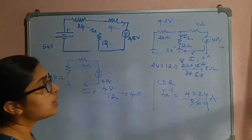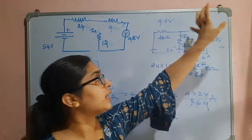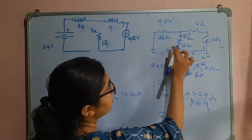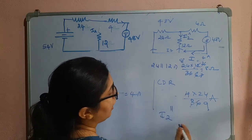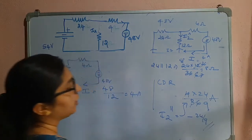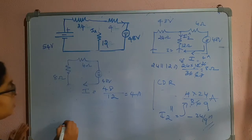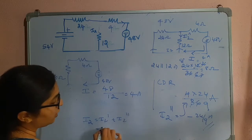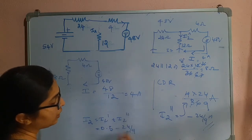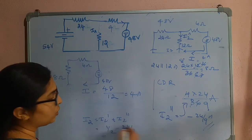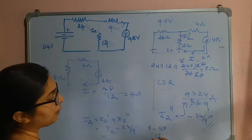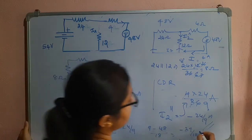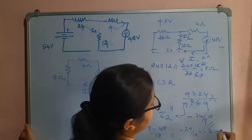The given current direction is downward but the actual current is upward, so we take the negative sign. Therefore I2'' = −24/9 amperes. Using the additivity principle: I2 = I2' + I2'' = 0.5 + (−24/9) = 1/2 − 24/9 = (9 − 48)/18 = −39/18 ≈ −2.16 amperes. This is the current flowing through the 12 ohm resistor.